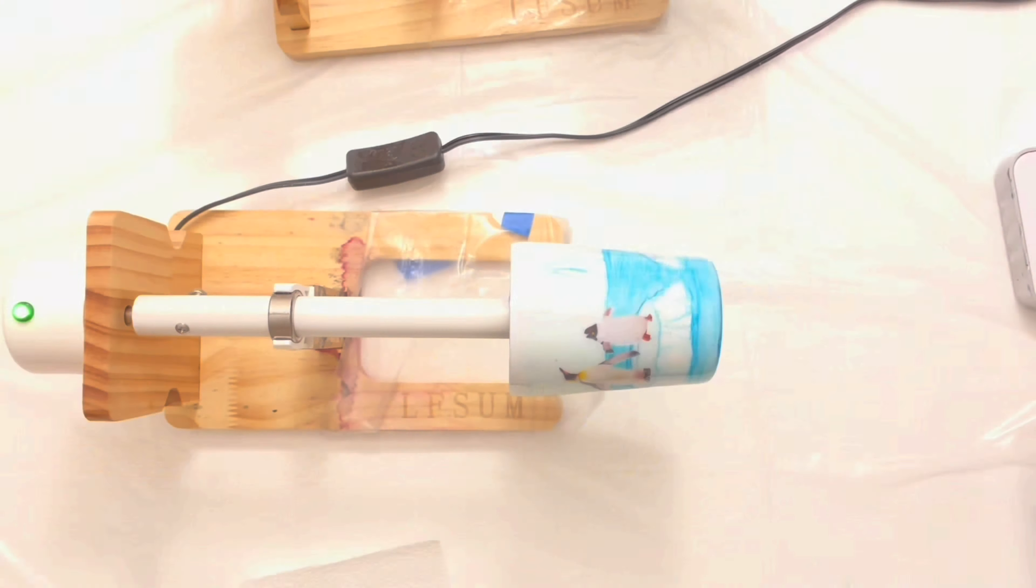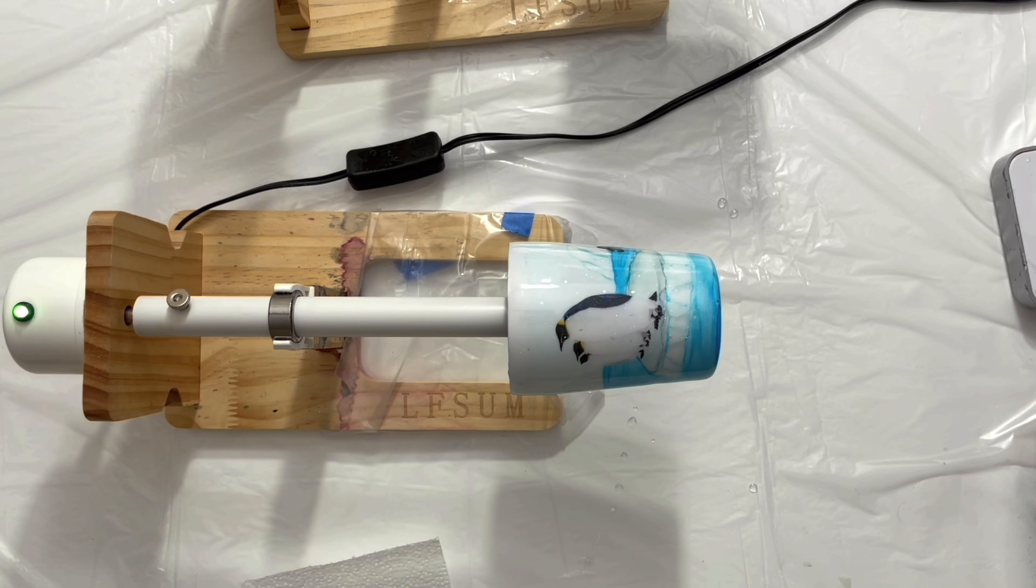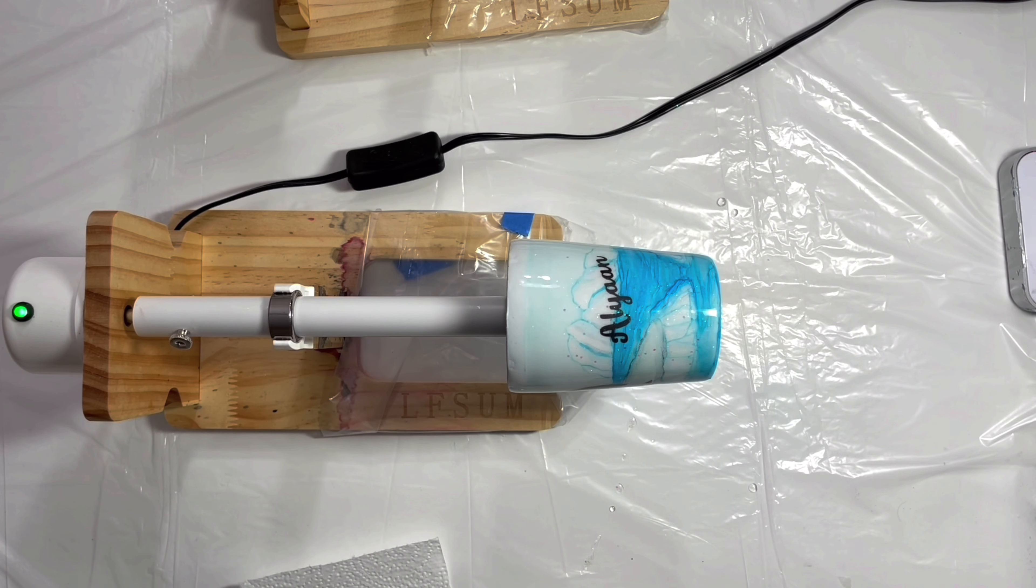I will leave the tumblers spinning on the machine for around six hours and touch them after 24 hours when the resin is cured. And I will also add another layer just to make sure they are thick and uniform everywhere.